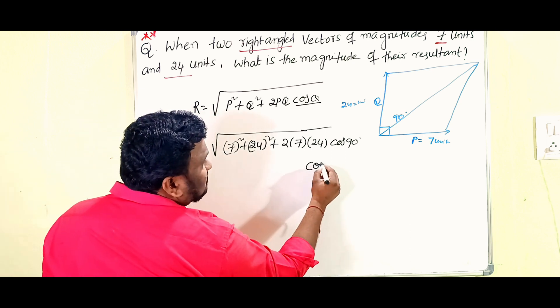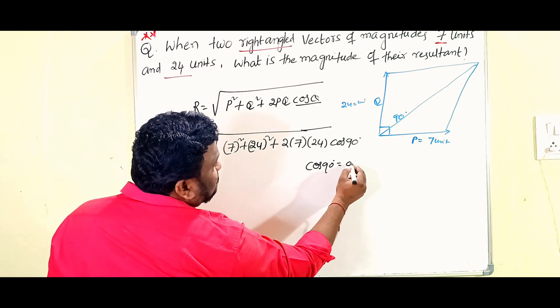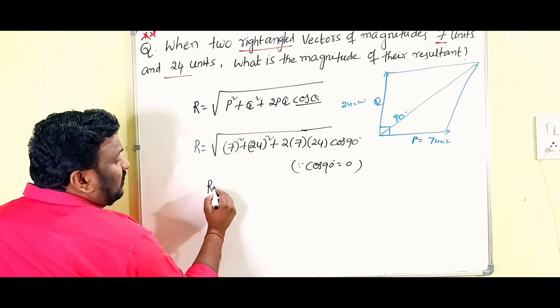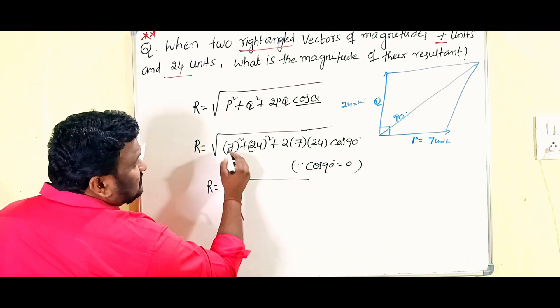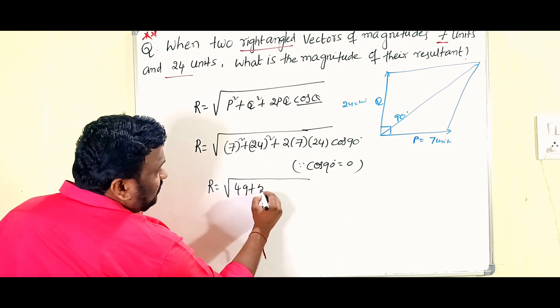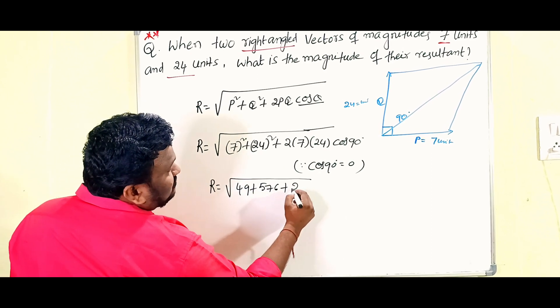Already we know cos 90 degrees equals zero. That's why here simply we are going to write R equals under root of 7 square means 49 plus 24 square means 576 plus 2 into 7 into 24.